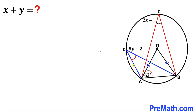Welcome to pre-math. In this video we have got blue and red triangles inscribed in a circle, such that angle ADB is represented by 5Y plus 2, angle ACB is represented by 2X minus 1, and angle OAB is 63 degrees. We are going to solve for X plus Y.